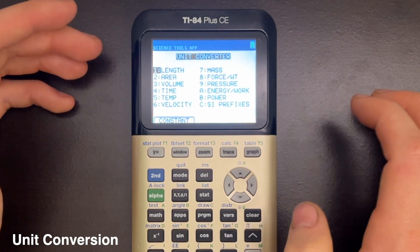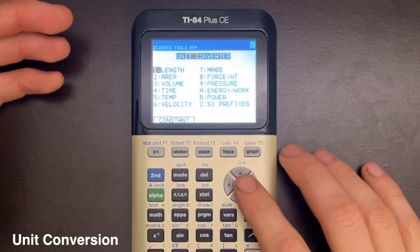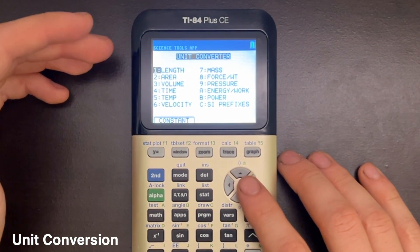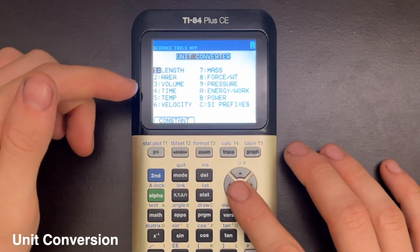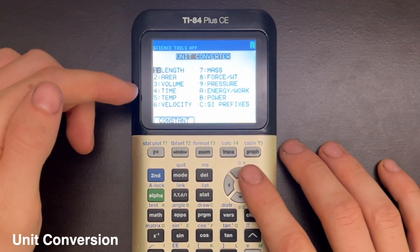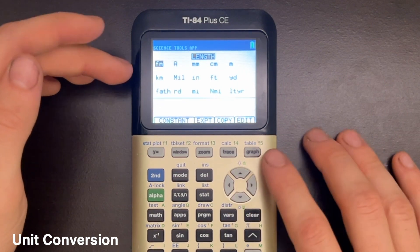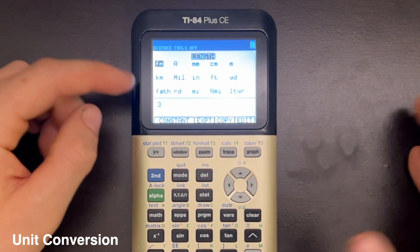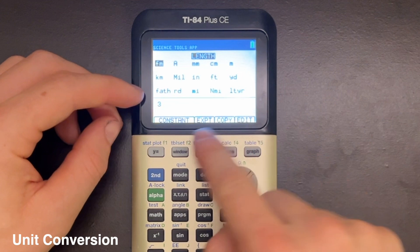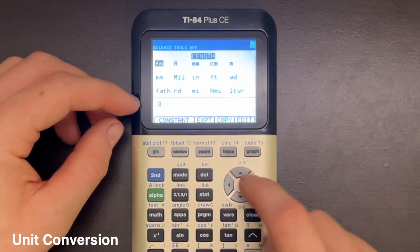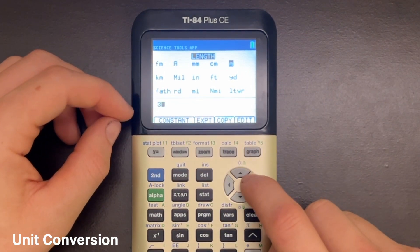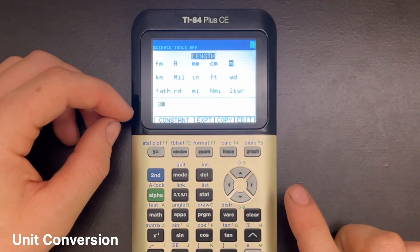But to perform a simple Unit Conversion, let's say I just want to convert meters to feet, for example. I will press Enter on Length since I'm converting a length, and say I want to convert three meters to feet. I would just enter three and then use the arrow pad to scroll over to meters and select Enter there.